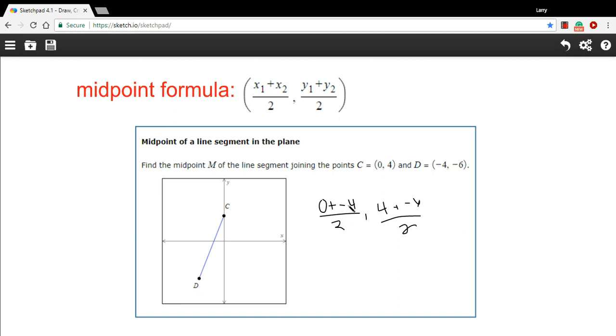Let's simplify this. This would be negative 4 on top divided by 2 would be negative 2, and 4 minus 6 is negative 2 divided by 2 would be negative 1.